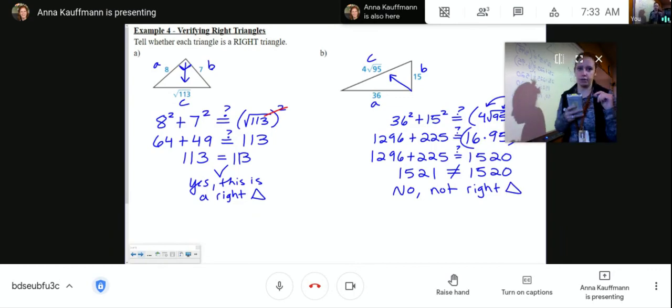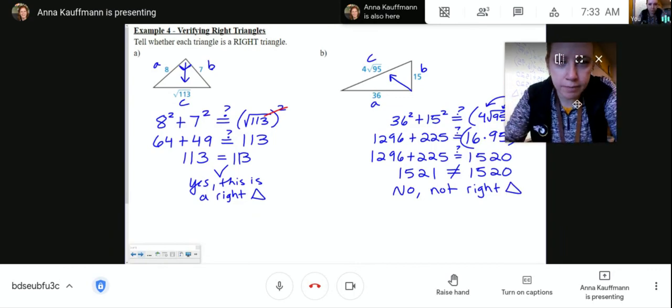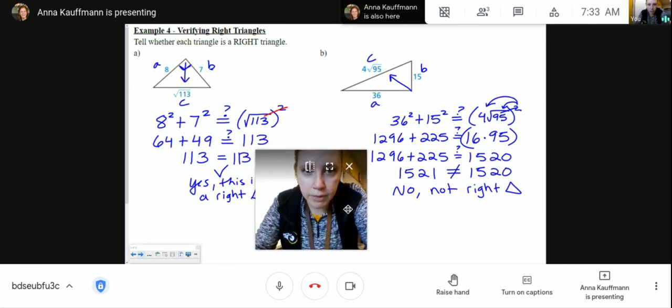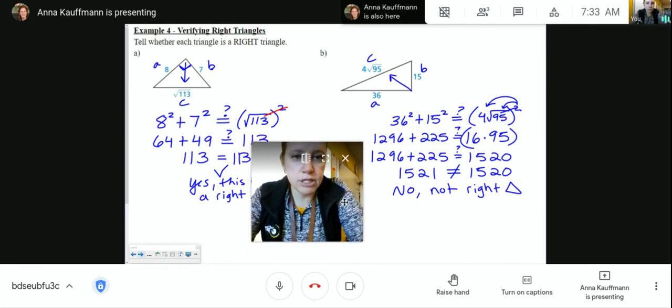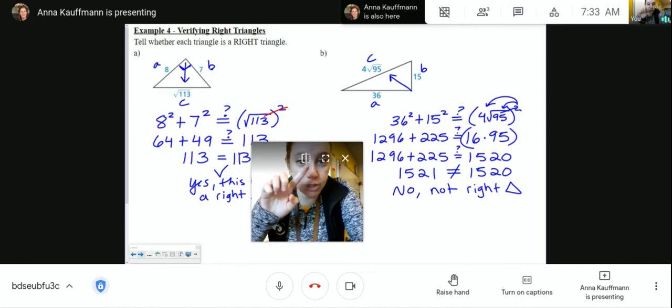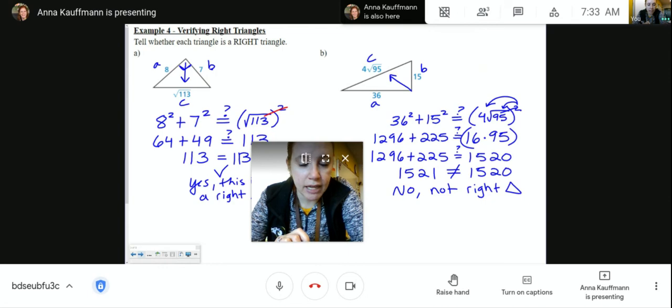1296 plus 225 is 1521, and that is not equal to 1520. So no, not right triangle. That is not a 90 degree angle. Distribute the square into each piece. 16 times 95, and that is not a right triangle. 1521 is not equal to 1520.